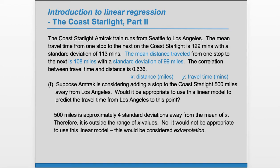So that means that this value of 500 is not within the range of our x values. So therefore, it would not be appropriate to use this linear model. This would be considered extrapolation. This x value is way far away from where the x values of our data lie.